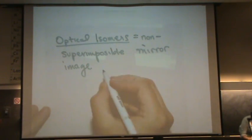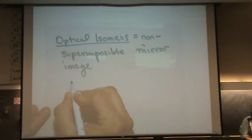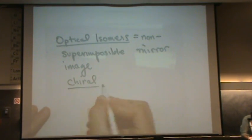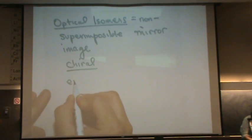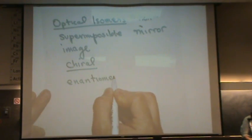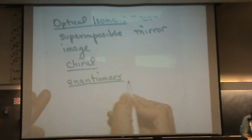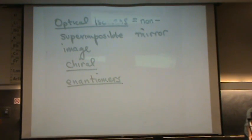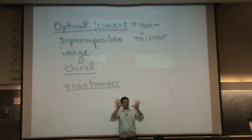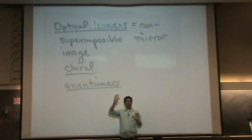We call these chiral. So there's a couple of terms you want to be familiar with. Chiral and enantiomers. Let me show you how to use these terms. Chiral. If I have two non-superimposable mirror images, then my right hand is chiral and my left hand is chiral. So they're both chiral. That's just a term to refer to one of them.